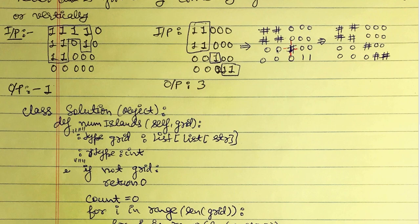We keep searching and only act when we find a one. The next time we find a one is in the third row. We replace it with the pound sign, then check its neighborhood — shown here in red — and we see four zeros, so there are no neighbors to flip. This island is now counted.